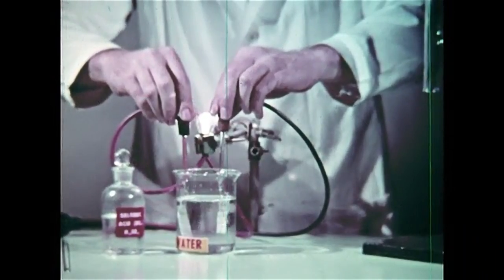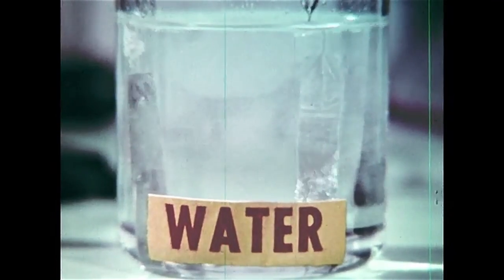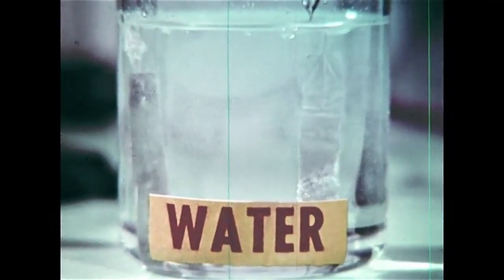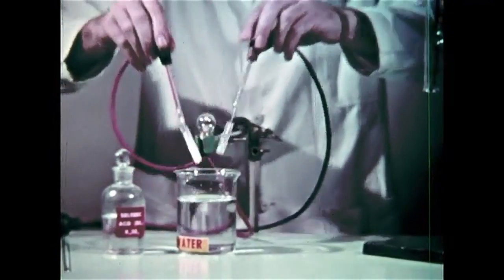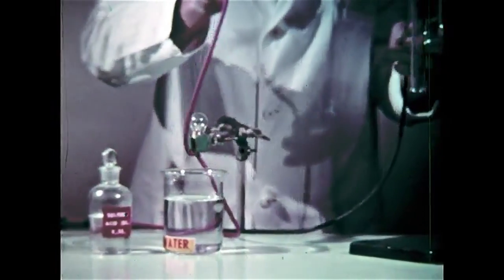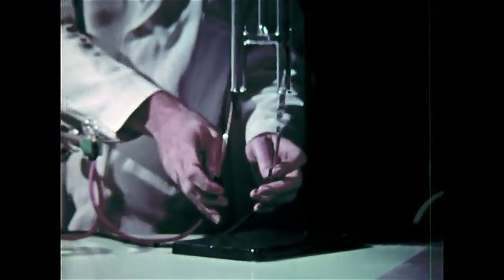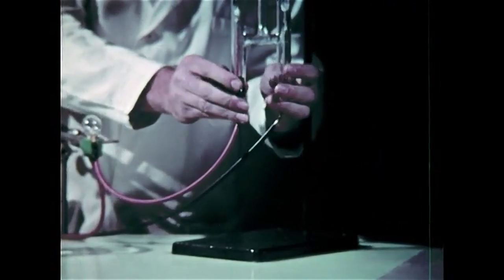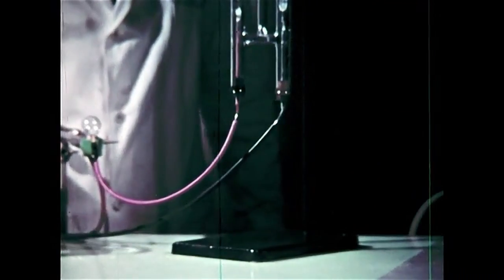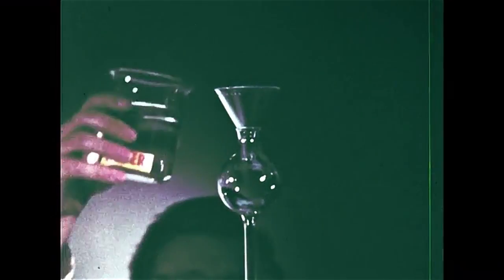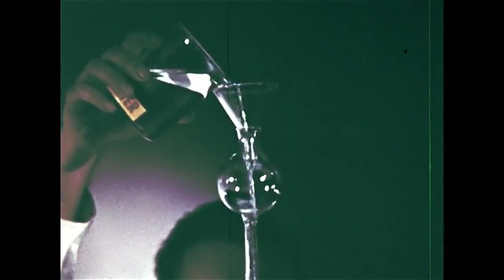The light goes back on, showing that the ions are now being drawn to the poles. So now we'll place the electrodes in this Hoffman tube, an apparatus which makes it easy to separate and collect the gases. Then we add the solution we just tested.